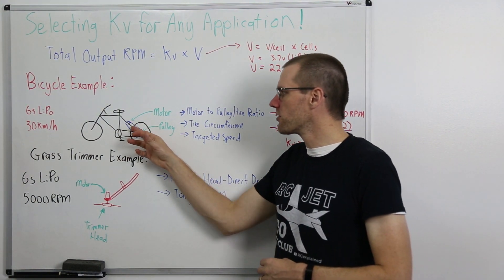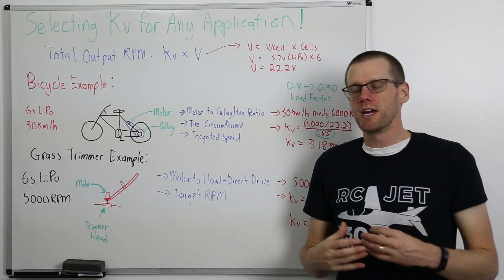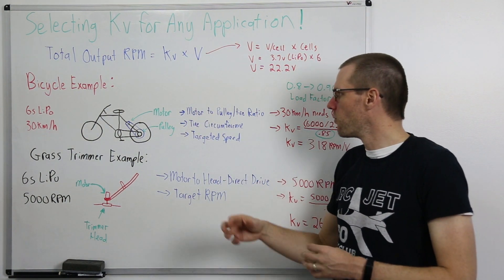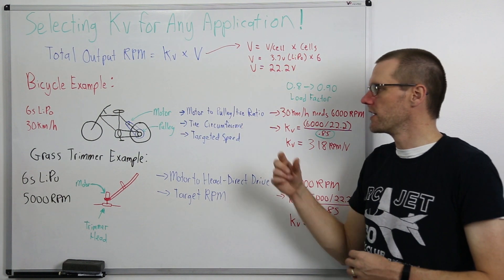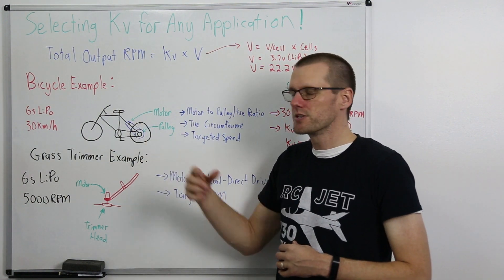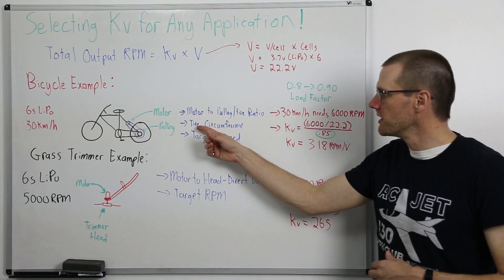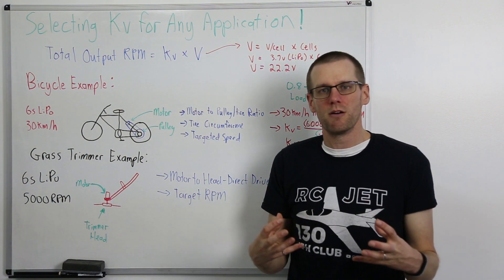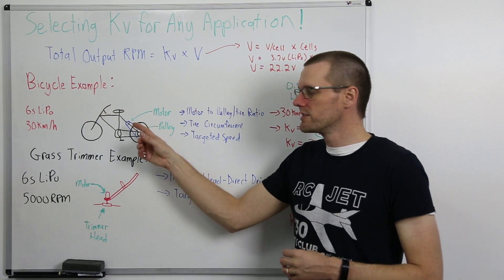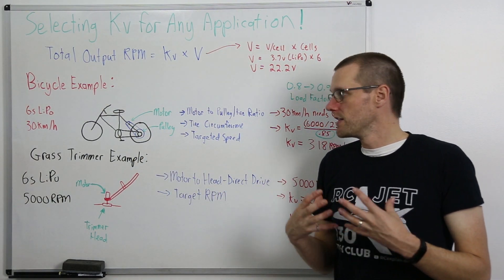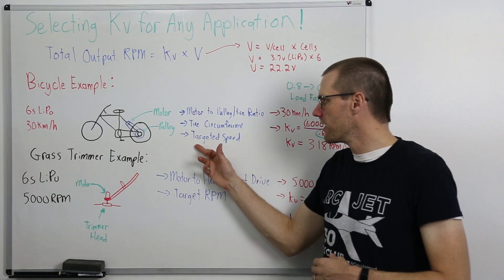Now a couple points that are quite critical for us in this specific example is these three items here. We first need to know what is the motor to pulley tire ratio. So how many times does the motor spin relative to how many times the tire spins? Next we need to understand the tire circumference. How large is the tire that you're actually going to be rotating that converts to a target speed.